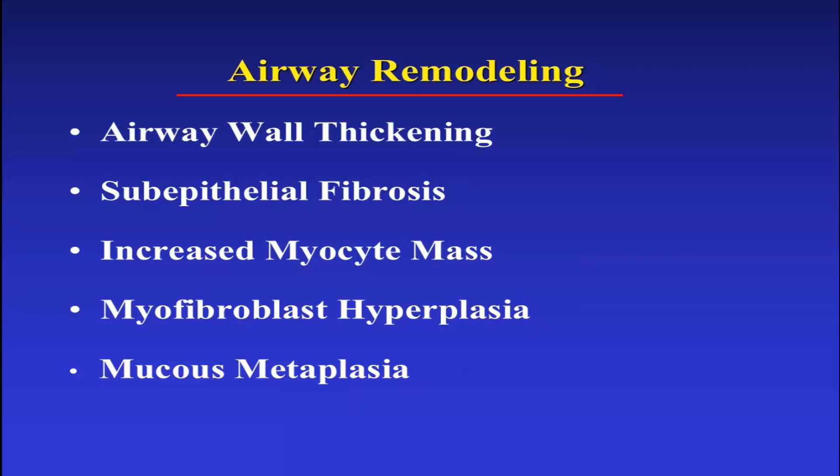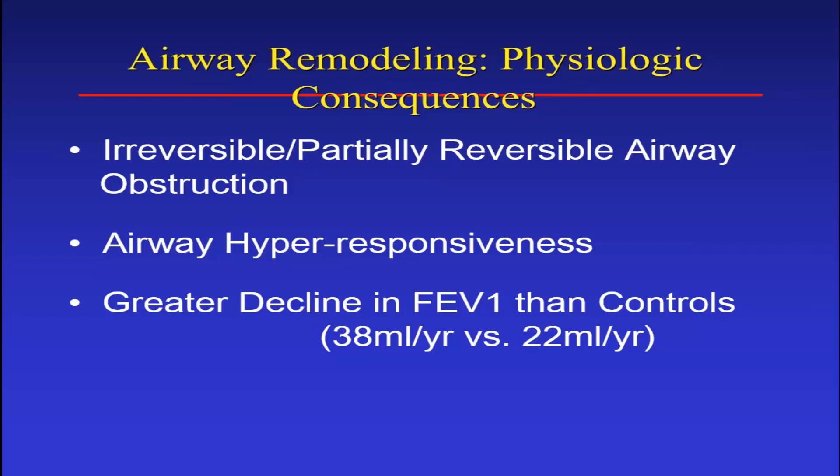Remodeling went along with it: airway wall thickening with subepithelial fibrosis, increased myocyte mass, myofibroblast hyperplasia, and mucus metaplasia with excess mucus. Airway remodeling is an important characteristic. It's hard to define because there's no one specific biomarker associated with it, but it's an important concept because it's associated with hyperresponsiveness.